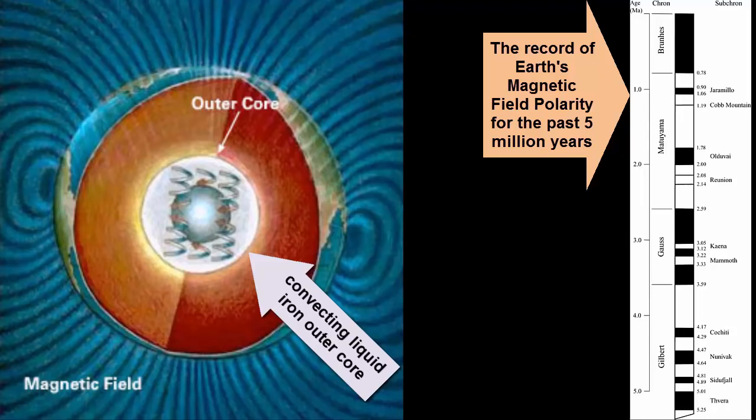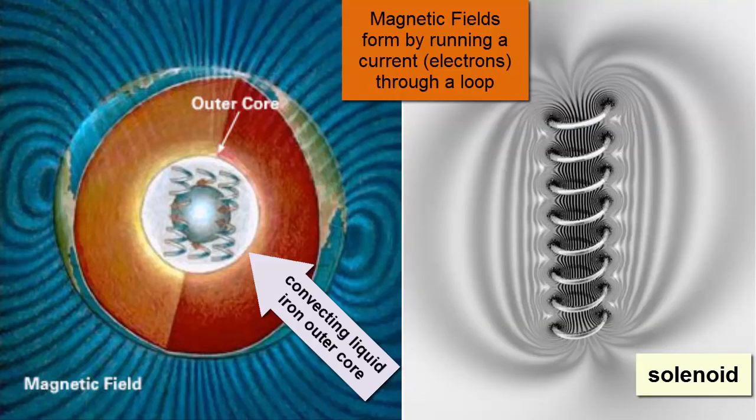Because it's a metal, that convection acts very much like a current of electrons moving in a loop, which you'll learn in a basic physics class is one way to produce a magnetic field.